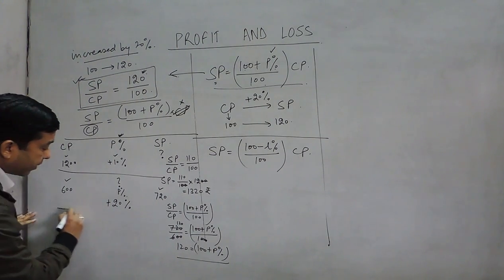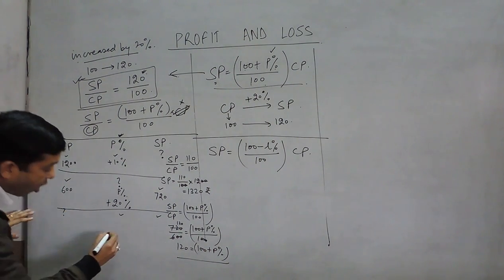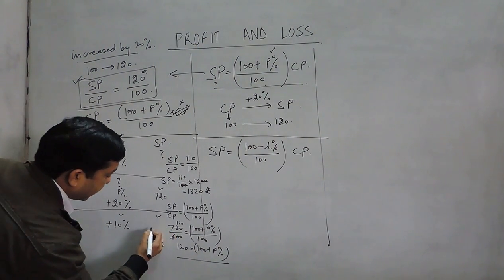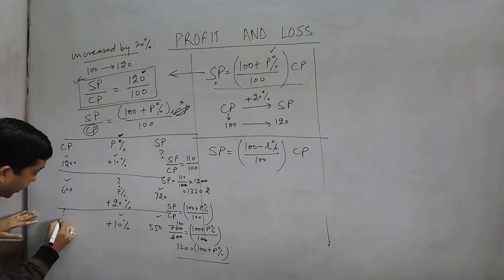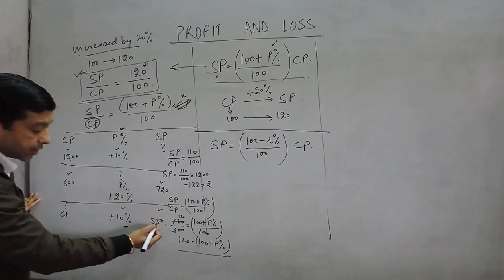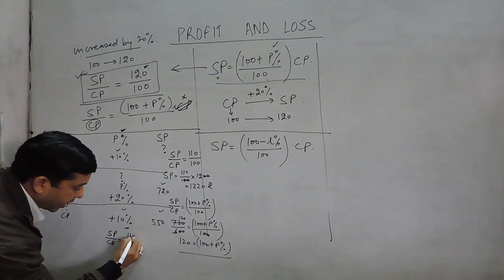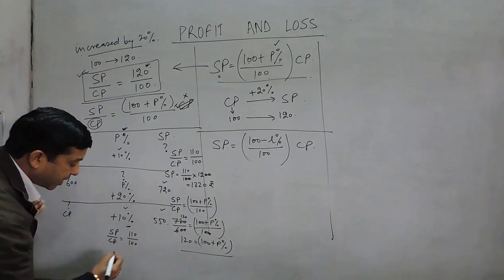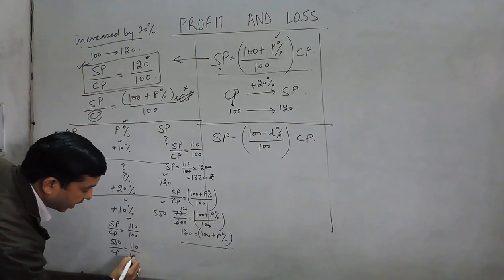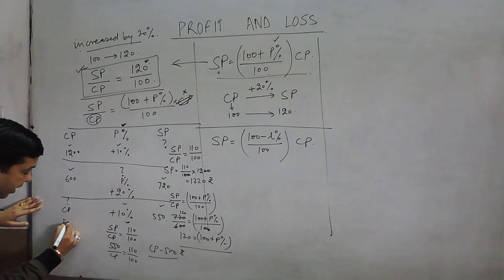The third type: profit percent and selling price are given, and we calculate the cost price. For example, there is a profit of 10% on an article sold for Rs.550. A 10% profit means SP / CP = 110 / 100, so 550 / CP = 110 / 100. Solving, the cost price comes out to be Rs.500.